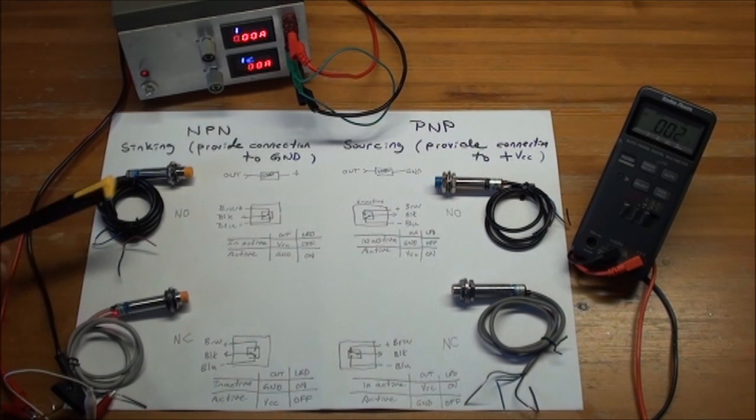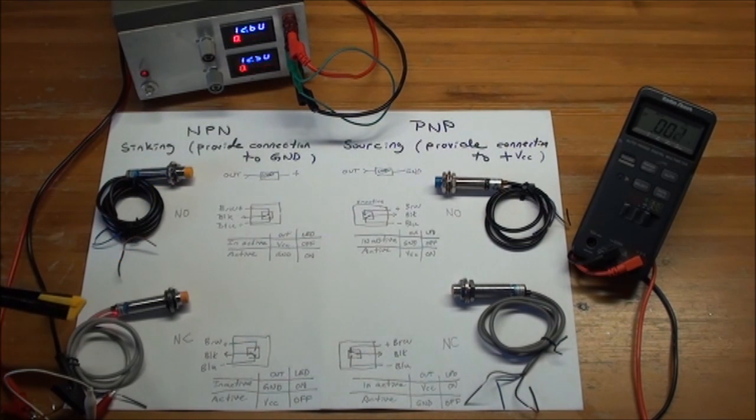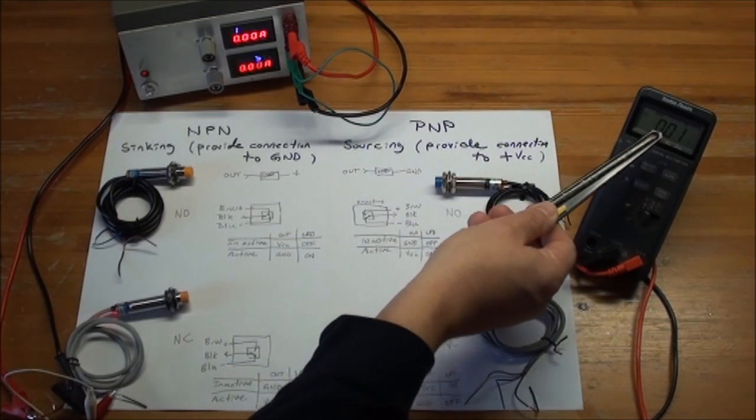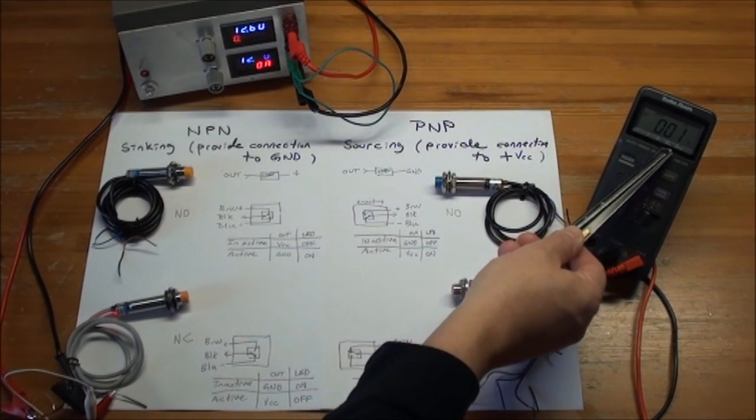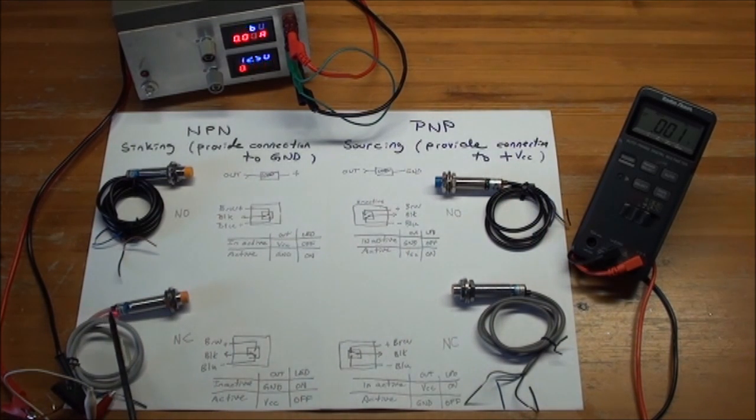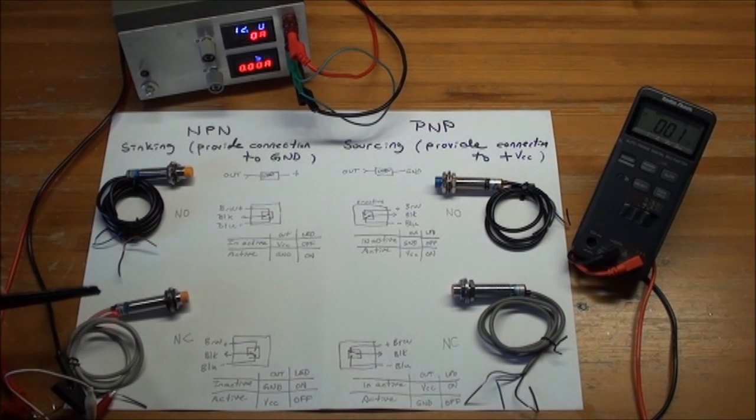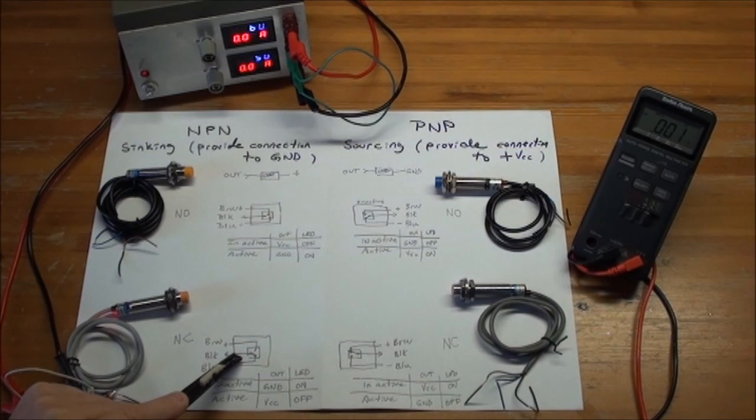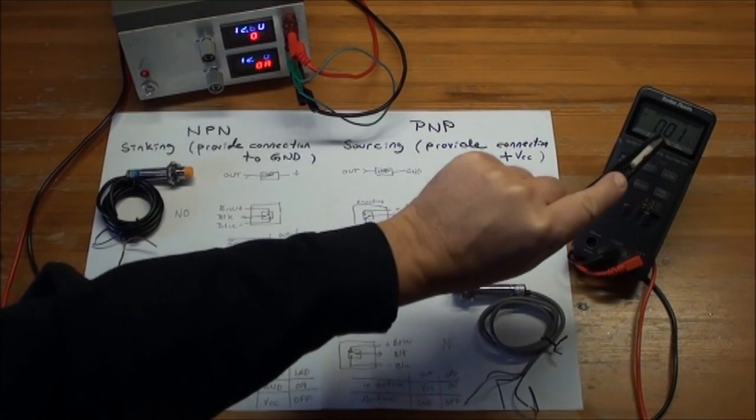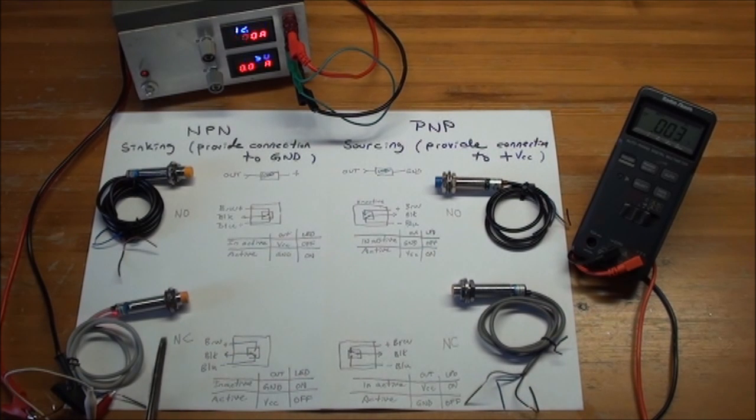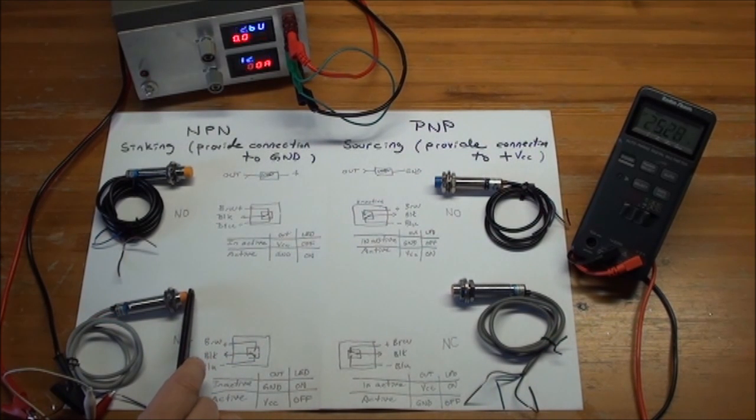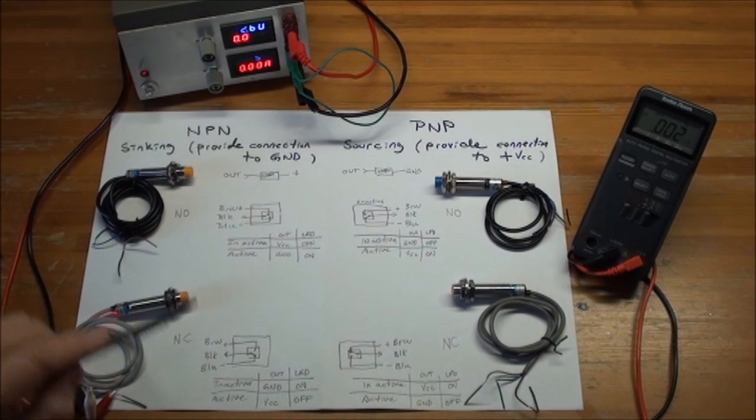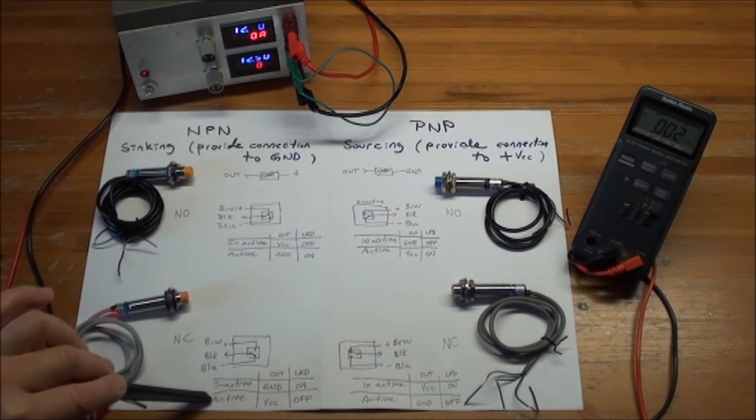And it's pretty obvious that we have the mirror image between what we saw up here. First of all, the output is not 24, it's zero. And you see the LED is on. So for the NPN normally closed, the internal diagram is that you have a connection in the inactive state between the black and the blue, which provides you ground on the output. And as soon as we activate it, you will get the 24 volts out and the LED goes out.